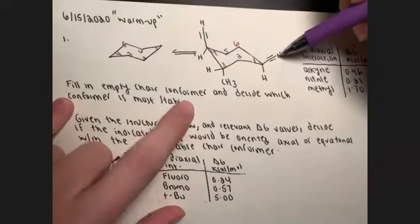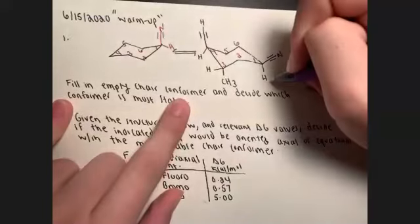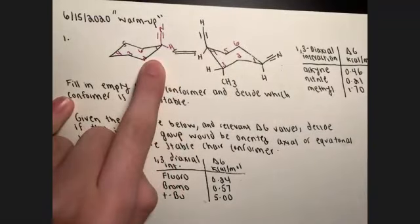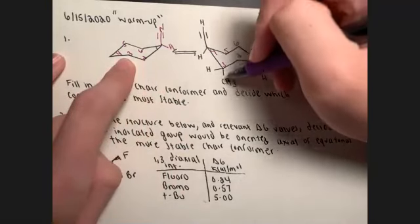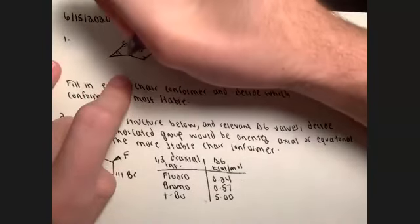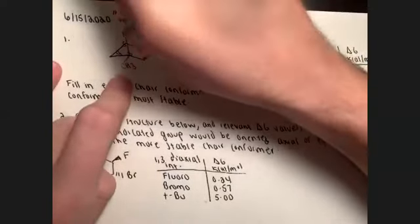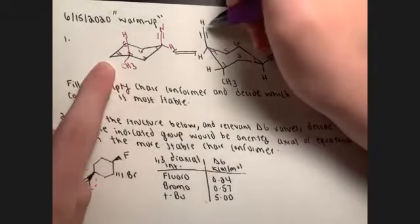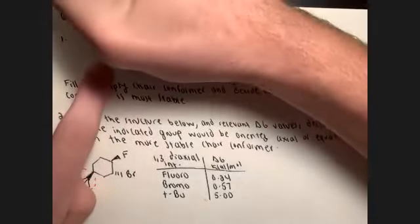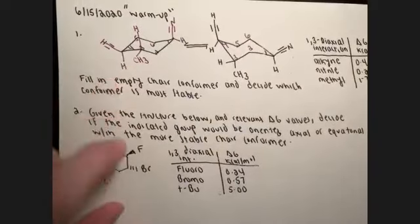On carbon one, it was pulled down below the plane, so the equatorial nitrile group should be oriented upward, and the axial hydrogen becomes equatorial. On carbon three, the axial methyl goes equatorial — so equatorial CH3 and axial hydrogen. On carbon four, the axial alkyne becomes equatorial, and the axial-down hydrogen stays.